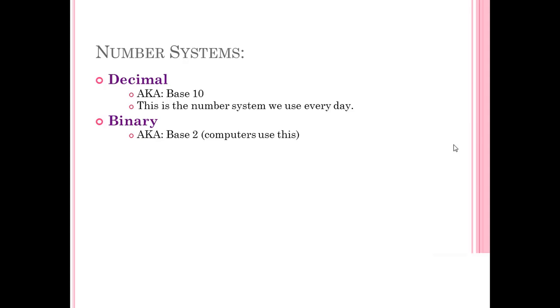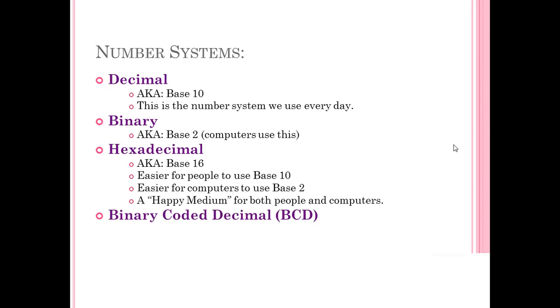Binary is base 2 and computers use it. Then we have hexadecimal, that's base 16, and it's easier for people and computers to use together. We prefer base 10, computers prefer base 2, so we use hexadecimal as a translator between the two. And then we have binary coded decimal, it's base 2 but a little different.